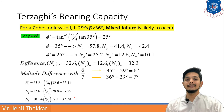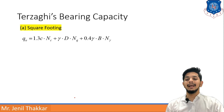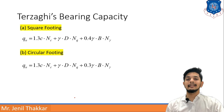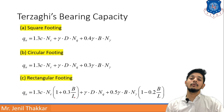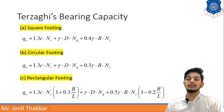For square footing, Terzaghi's formula is: Q_u = 1.3·C·N_C + γ·D·N_Q + 0.4·γ·B·N_γ. For circular footing: Q_u = 1.3·C·N_C + γ·D·N_Q + 0.3·γ·B·N_γ. For rectangular footing: Q_u = 1.3·C·N_C·(1 + 0.3·B/L) + γ·D·N_Q + 0.5·γ·B·N_γ·(1 − 0.2·B/L). These formulas must be remembered.